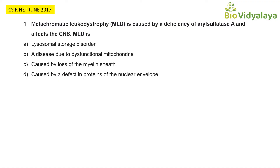First question, from CSIR NET June 2017: Metachromatic leukodystrophy (MLD) is caused by a deficiency of aryl sulfatase A and affects the CNS. MLD is — option A: lysosomal storage disorder; option B: a disease due to dysfunctional mitochondria; option C: caused by loss of myelin sheath; option D: caused by defective proteins of the nuclear envelope.